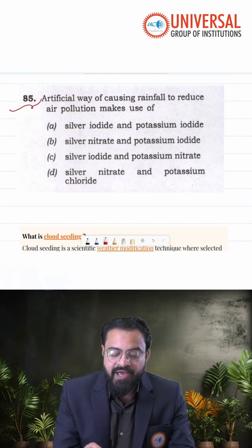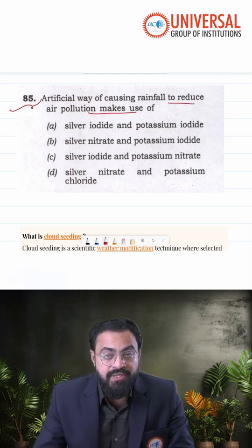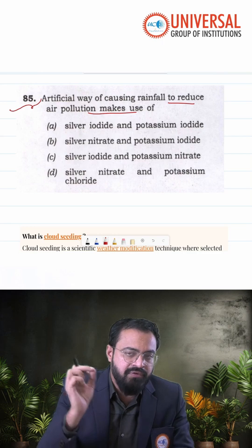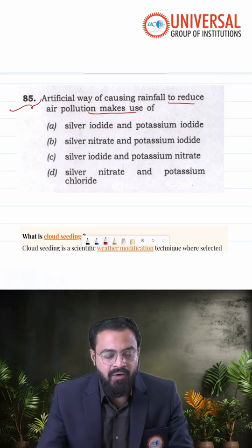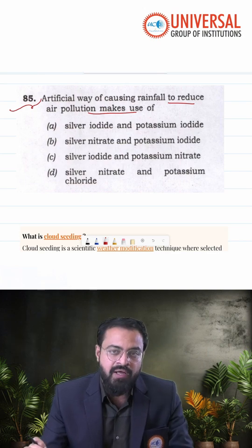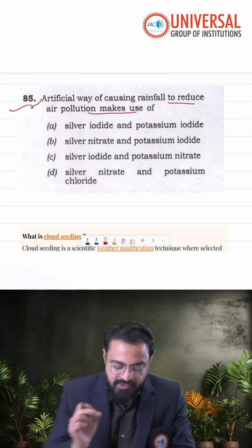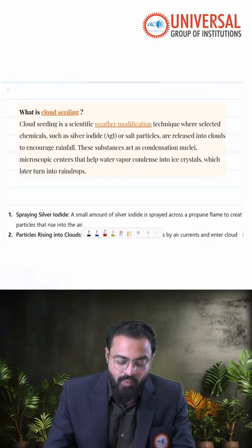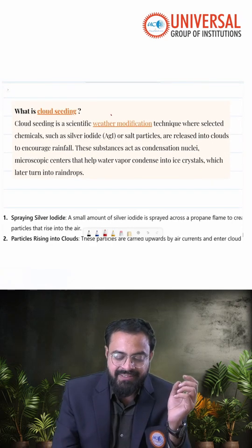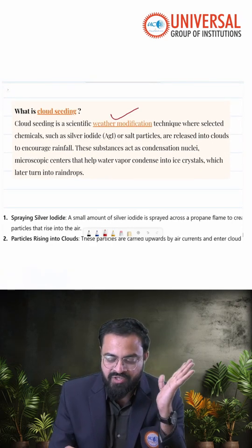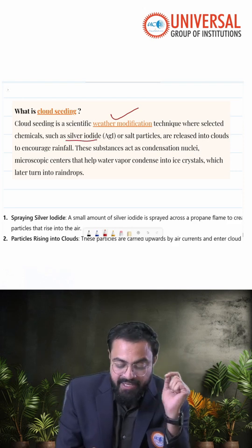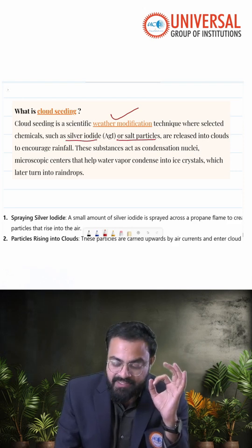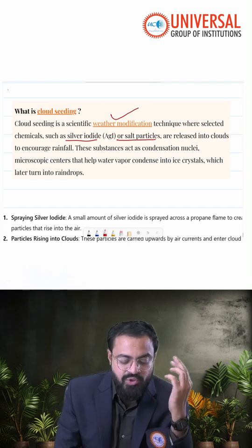The question is: the artificial way of causing rainfall to reduce the air pollution makes use of which of the following components? First, let us understand what exactly is artificial rainfall — that is nothing but cloud seeding. Cloud seeding is nothing but the scientific weather modification technique where chemicals such as silver iodide or salt particles are released into the clouds.